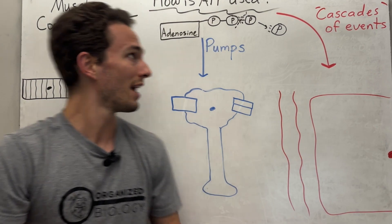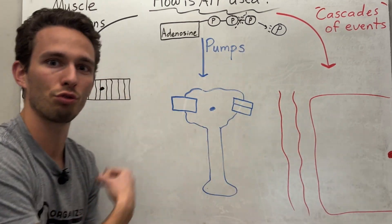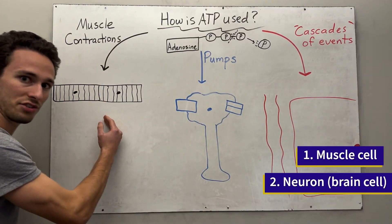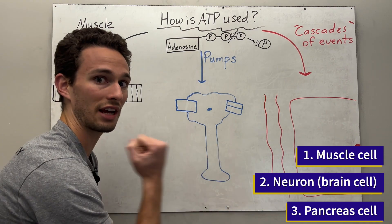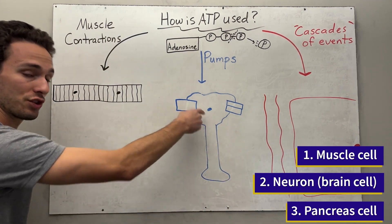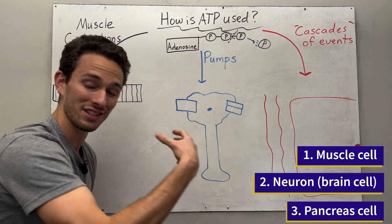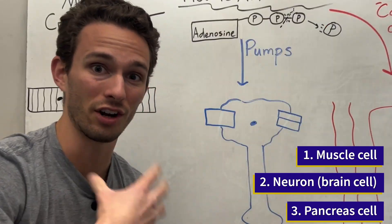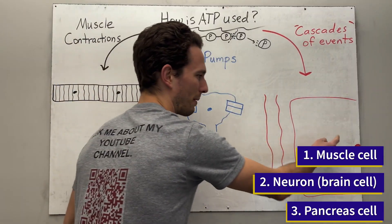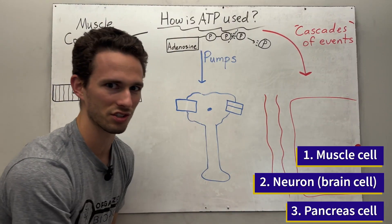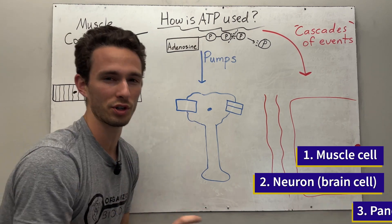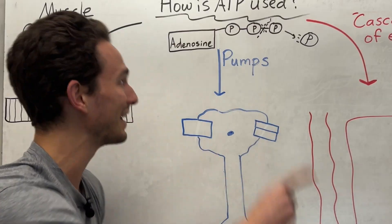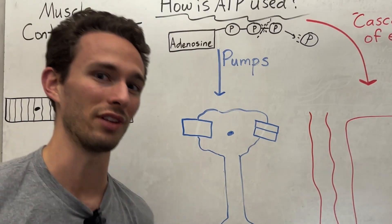I'm going to use ATP in three different cells of our bodies. First, the skeletal muscles — the ones that move our skeleton. Second, the neurons, which are in our brains and spinal cords, which conduct signals and make us think and feel. And lastly, a pancreas cell that is going to be secreting a hormone called insulin. All three processes need ATP.